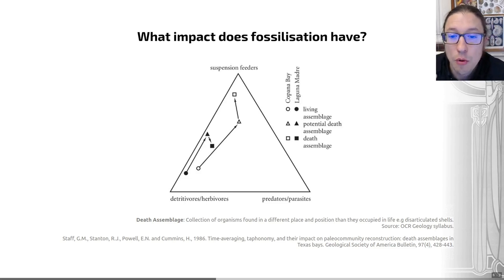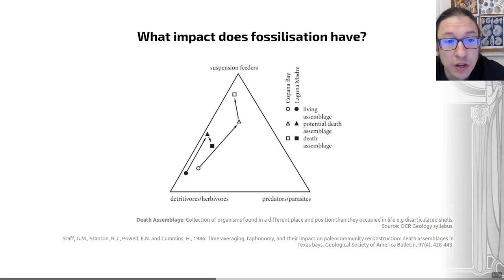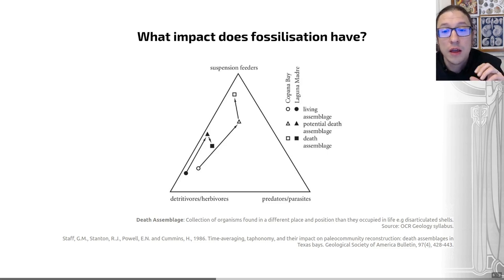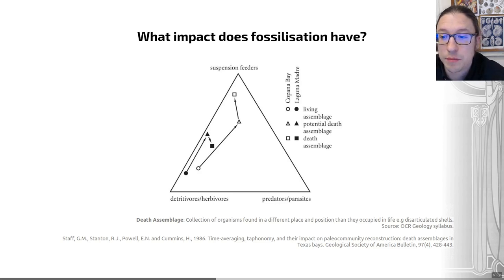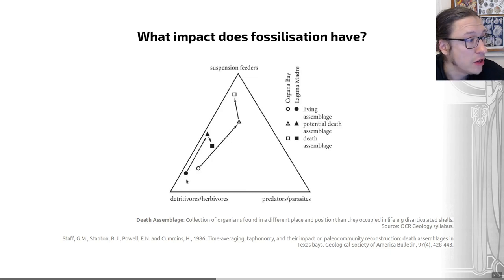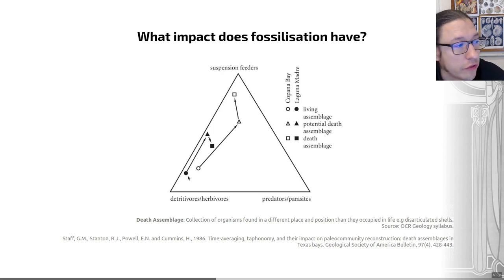Some of the headline findings are really interesting. Most animals in living communities are not usually preserved — most things, for example those mostly made of soft parts, are unlikely to be fossilized. However, the majority of animals that do have preservation potential — that's shelled organisms — do in fact enter the fossil record. This was all assessed by looking at the living communities in these areas and what was found in the sediment. More of these organisms as a proportion were found in the death assemblages than in living assemblages, suggesting that time averaging was clearly significant.